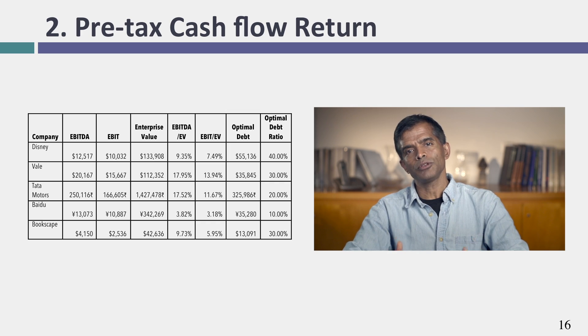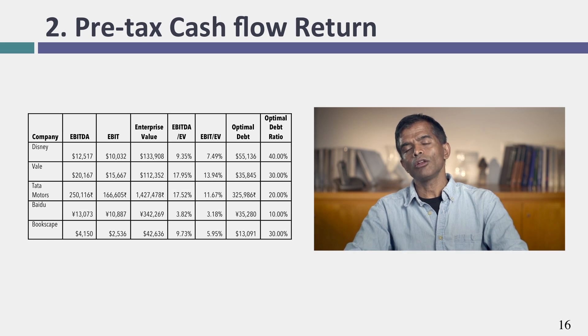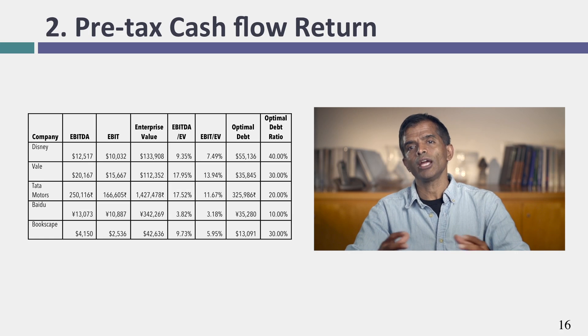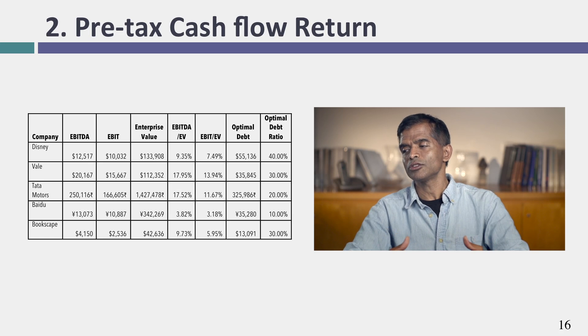The second factor is EBITDA and operating income as a percentage of market value. The higher this ratio, the more a company can afford to borrow. Disney's EBITDA as a percentage of enterprise value is about 9.35%, giving it an optimal of 40%. Companies with optimal debt ratios of 70–90% usually generate huge cash flows as a percentage of market value. Baidu's EBITDA as a percentage of enterprise value is less than 4%, so its optimal reflects that at only 10%.